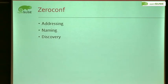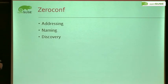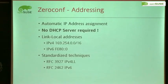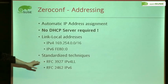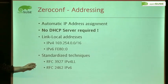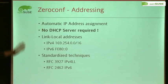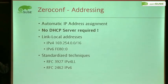ZeroConf covers three parts — it's also called a three-layer foundation. It solves these three problems for you and it looks like magic. The layers are: addressing, naming, and discovery for your host. For addressing, with IPv6 there's automatic magic to assign IP addresses. For IPv4, there's further magic — we call it Avahi autoconf. There is no DHCP server required. We just connected the machines to that switch and they are assigned their own IP addresses. This is quite nice for home networks.